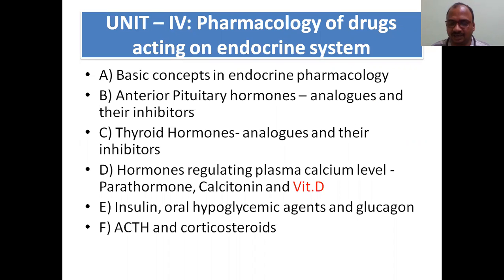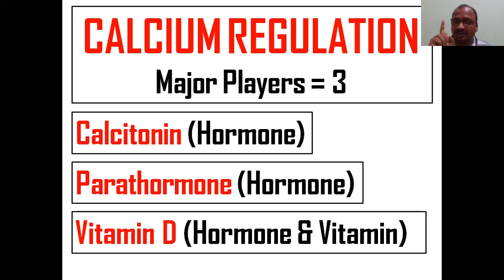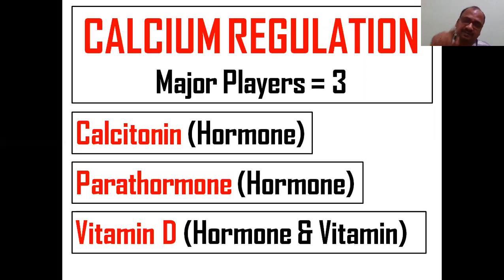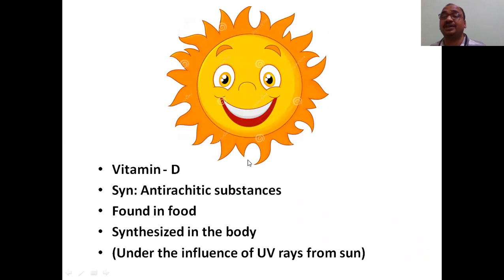Today we'll see vitamin D. In calcium regulation in our body, there are three major players: calcitonin, that is a hormone; parathormone, the name itself indicates it is a hormone; and vitamin D, which is both a hormone and a vitamin. Don't think that it is only a vitamin alone. Vitamin D is also called an anti-rachitic substance — very important.